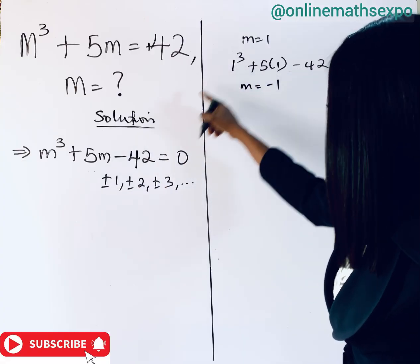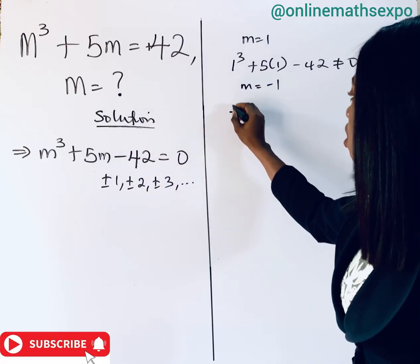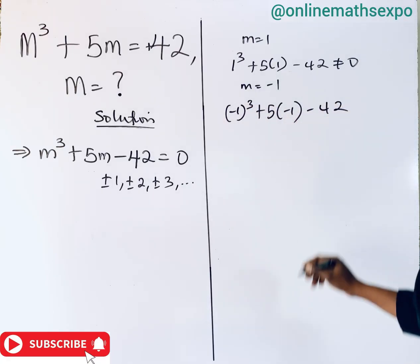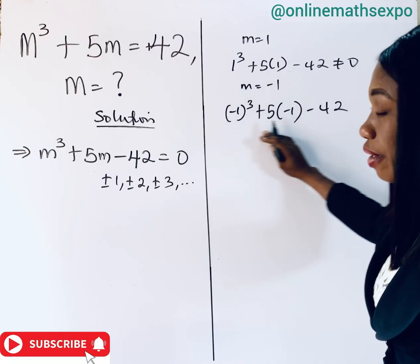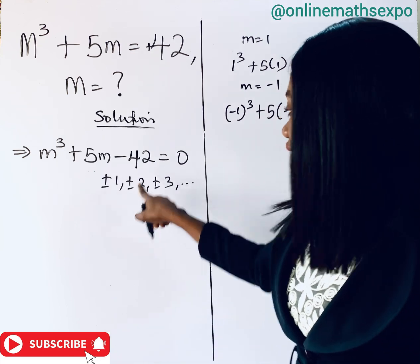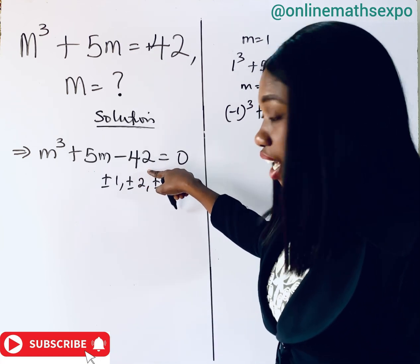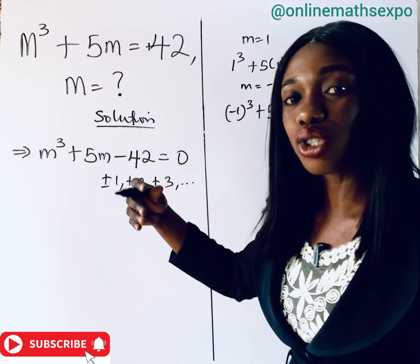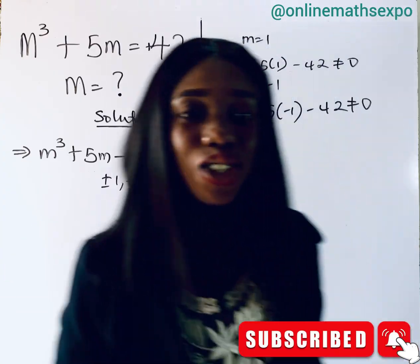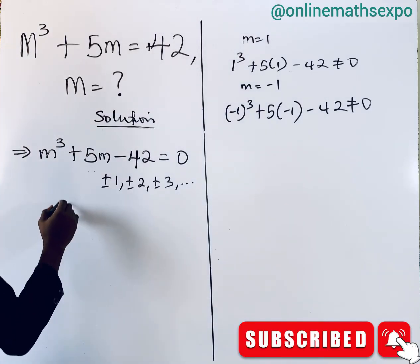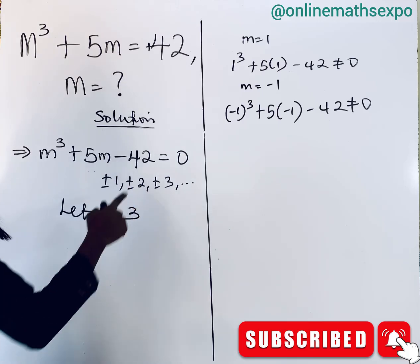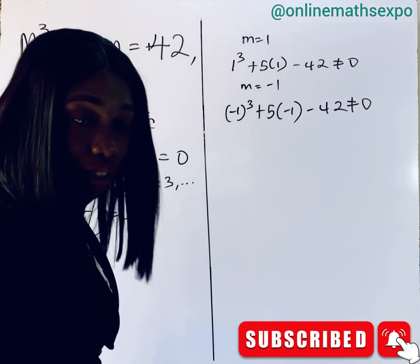Let's try m = −1: substituting gives (−1)³ + 5(−1) − 42, which also does not equal zero. You observe that this number is quite large, so we need to try a higher value of m.